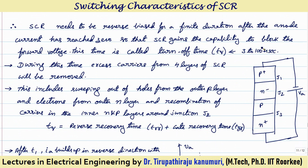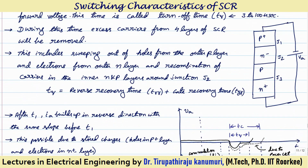Turn-on takes less time but turn-off takes more time. During turn-off time, excess carriers from all four layers of the SCR — P+, N−, P, and N+ — will be removed. The total turn-off time is divided into two parts: reverse recovery time TRR (time to remove charges from outer regions around J1 and J3) and gate recovery time Tgr (time for carriers to recombine in the intermediate regions around junction J2).